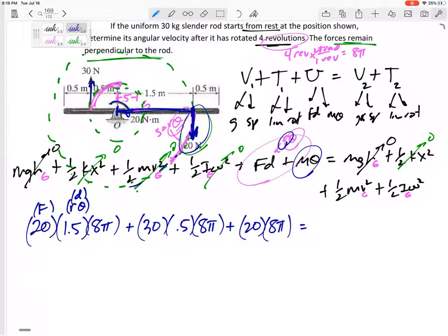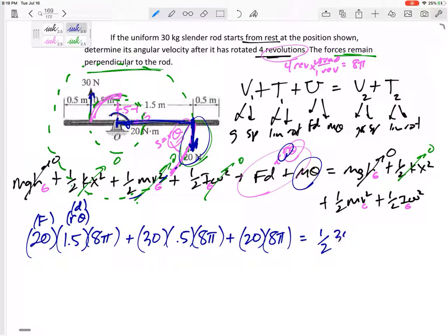That's all we have on the left hand side. On the right hand side we have ½m—what is m? 30—½m·v_G². I'm not sure about v_G. Right here, here is point G. I'll come back to that.